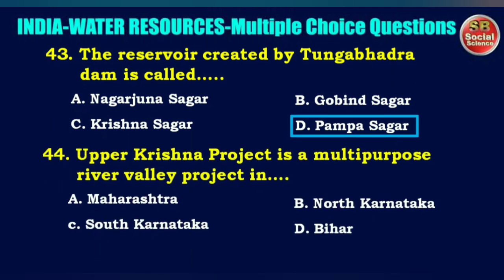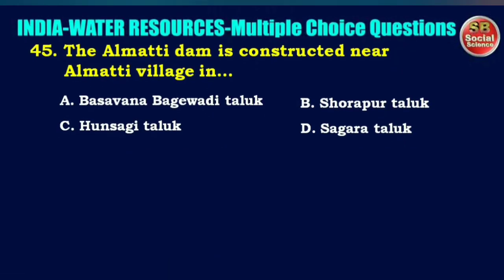Upper Krishna project is a multi-purpose river valley project in — options are Maharashtra, North Karnataka, South Karnataka, or Bihar. The right answer is option B: North Karnataka.